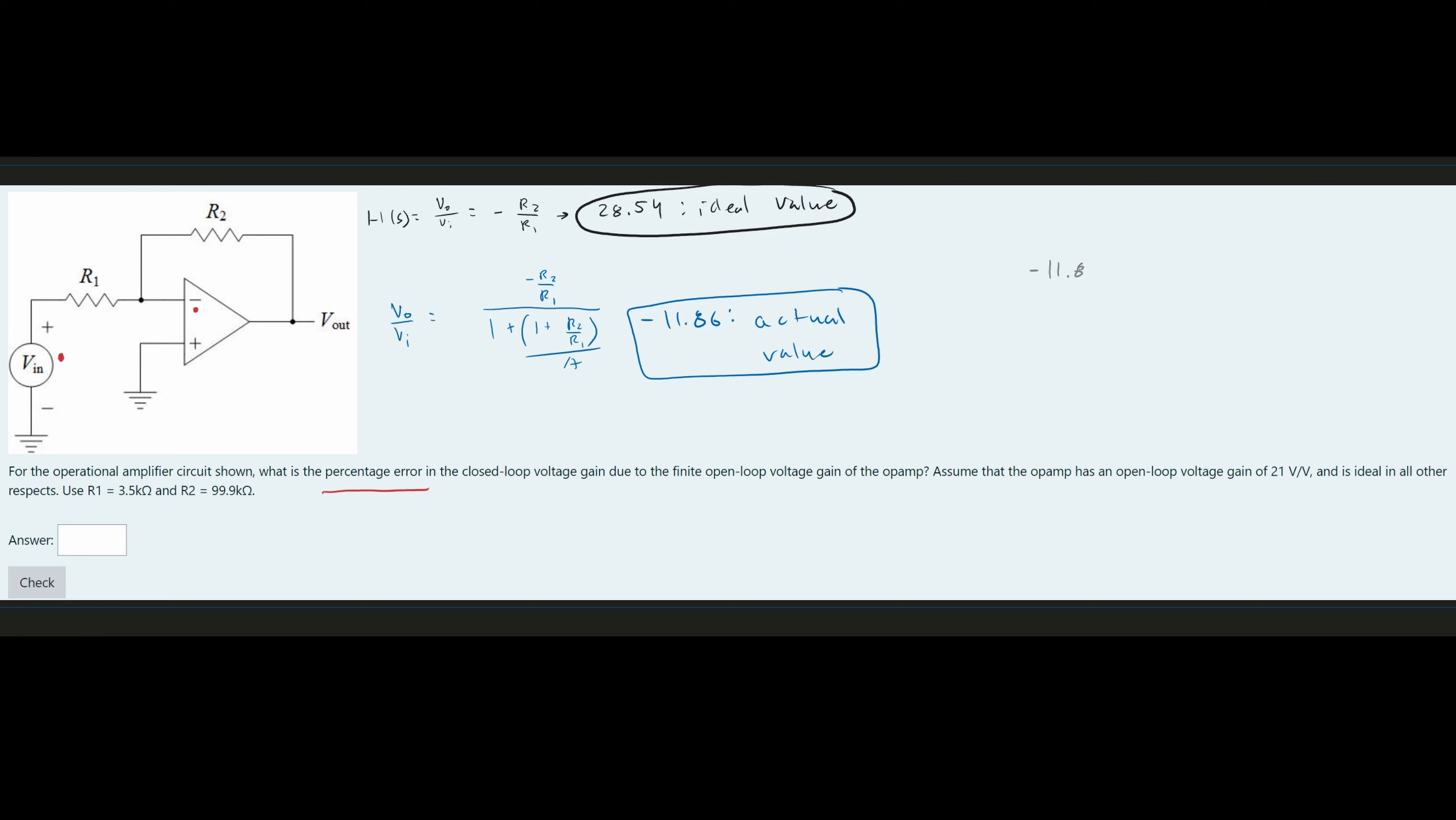11.86 minus our ideal value. And I forgot to bring this negative right here. So we're going to have a negative 28.54. So we have minus a negative 28.54. We have absolute values for this. This becomes a positive. And this is over our ideal value, which is 28.54. And then for a percent difference, we multiply this by 100. So if we plug all this into a calculator, we are going to get 58.45. And this is our percentage.